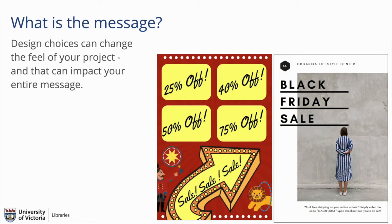The flyer on the left has the message of a sort of bargain basement sale — you would imagine a lot of inexpensive, cheaply produced, almost dollar store style piles of product. And the flyer on the right gives the impression of boutique, high quality, high-end product that, though it's on sale, the expectation is that you're going to see things at a very high price.